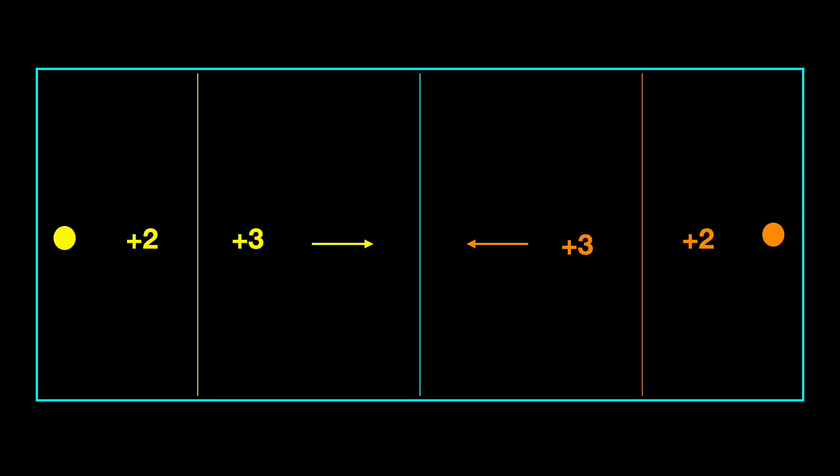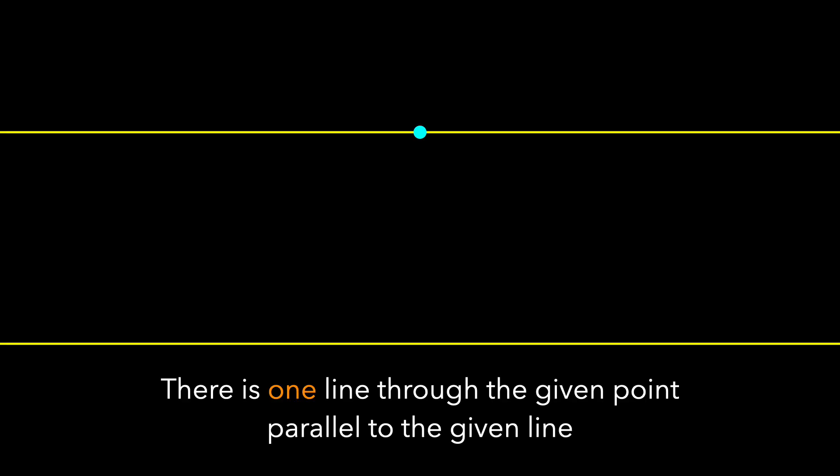And behind the three-point lines, yellow or orange scored three points. And this changed the game. So Euclid's parallel postulate in the plane says there's one line through a given point that is parallel to the given line. And so we're changing that rule — we're changing that assumption.